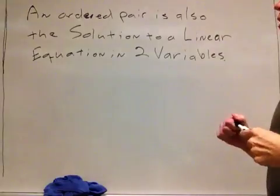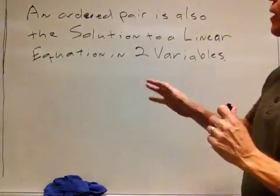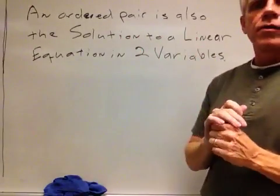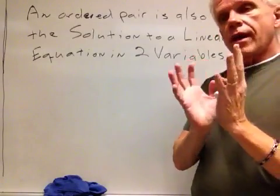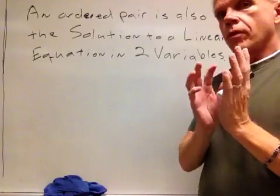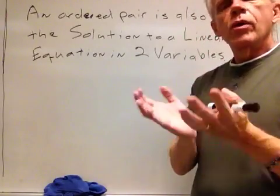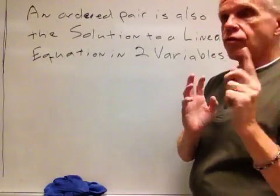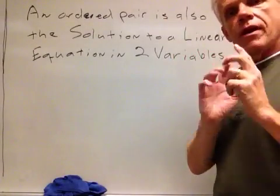Let's say a couple of words about that definition before we move on. This ordered pair, this point that we were able to find on the graph, is not only a point but also a solution to something we call a linear equation. There are certain equations that, when we graph them on a rectangular coordinate system, produce a straight line — those are known as linear equations. We say 'two variables' because there are actually two variables in all of these linear equations.